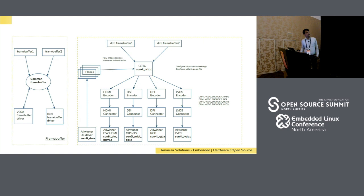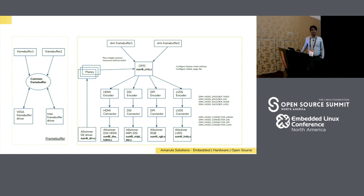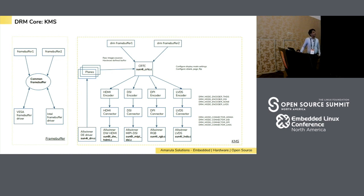We have DRM mode encoder for TMDS (that is for HDMI), encoder for DSI, encoder for none (parallel RGB), and encoder for LVDS. Similar to encoders, we have connectors: connectors for HDMI, DSI, and DPI (parallel RGB), and LVDS connectors. All this code needs to be created when supporting a new display controller in Linux. This framework is called KMS — Kernel Mode Setting — and it replaces the legacy framebuffer model.